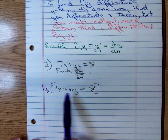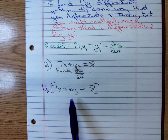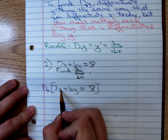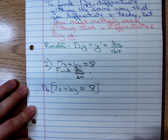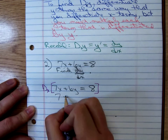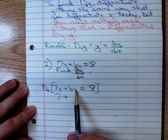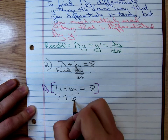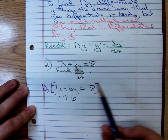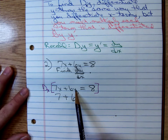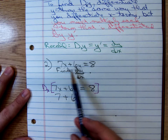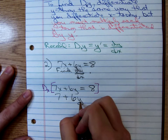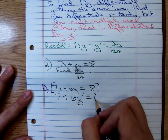We know how to differentiate: just find the derivative of each individual term. The derivative of 7x with respect to x — we've been doing that since the start of the semester — that's 7. Now we differentiate 6y. The derivative of 6 times a variable is 6. But according to the chain rule, you then have to multiply by the derivative of that inside function. y is representing a function, so to denote that we're multiplying by the derivative of the function, we multiply by y prime. And the derivative of 8 is 0.